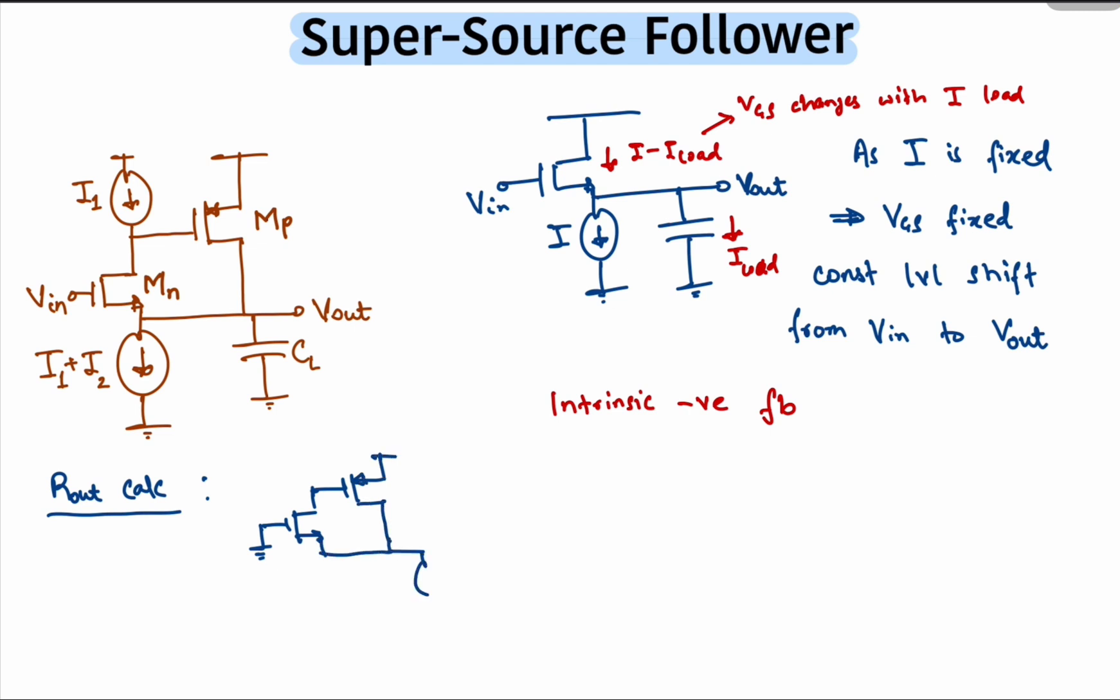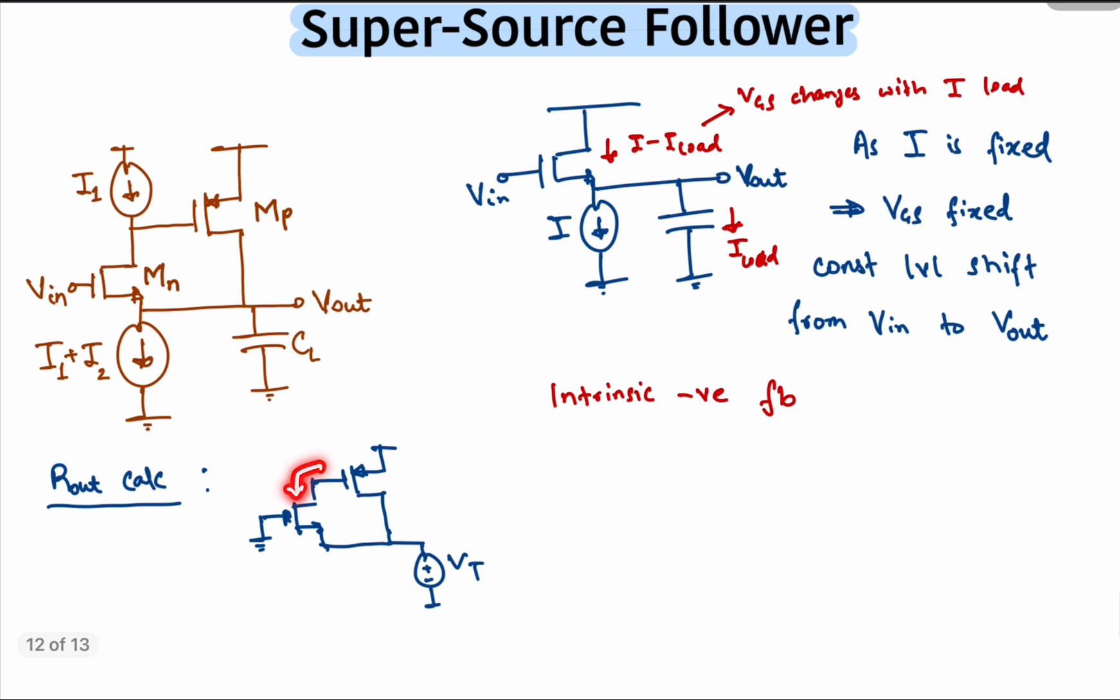We short Vn and we apply a test voltage at the output node and also open up the current source. Note that there's no path for current to flow through MN since it is connected to the gate of MP. Therefore, the gmVt current will loop into its output impedance Rn.